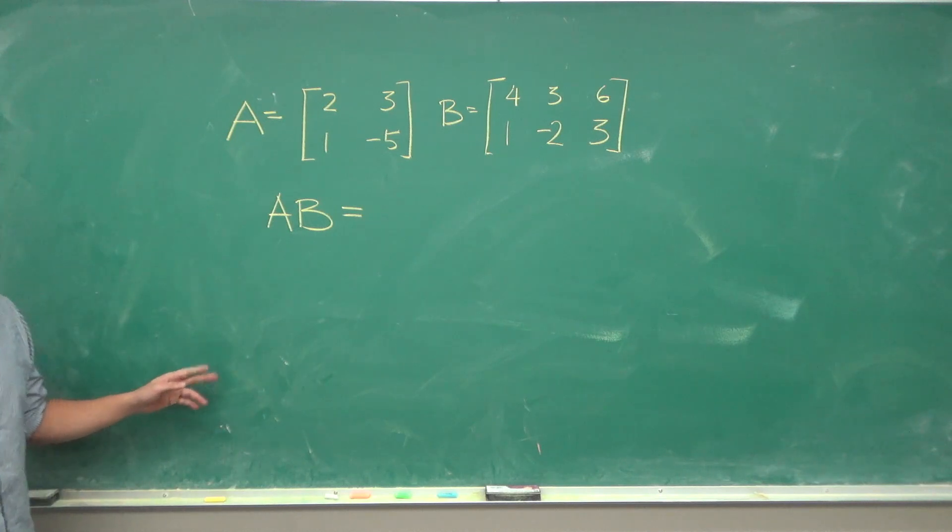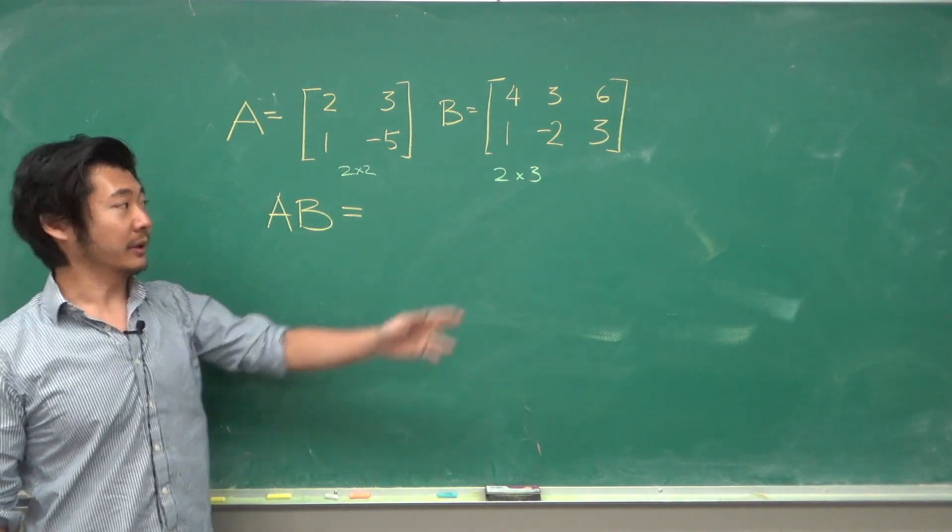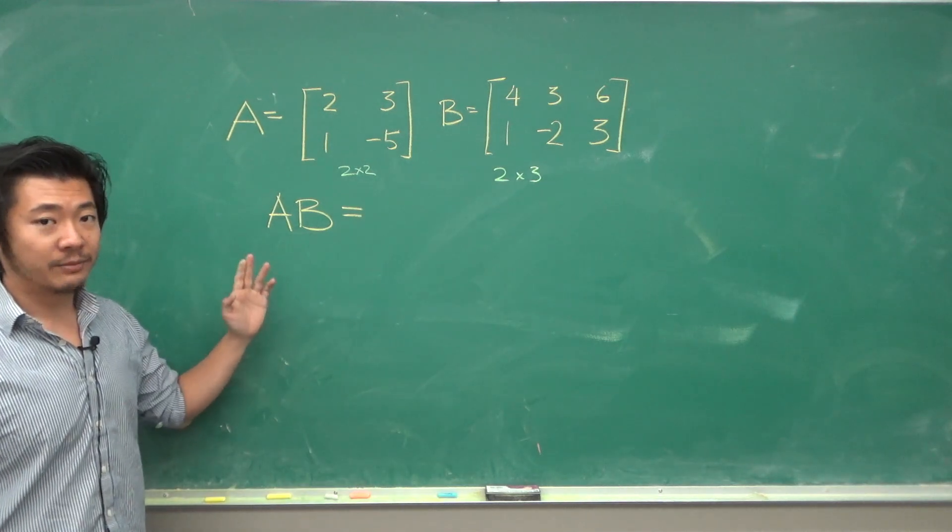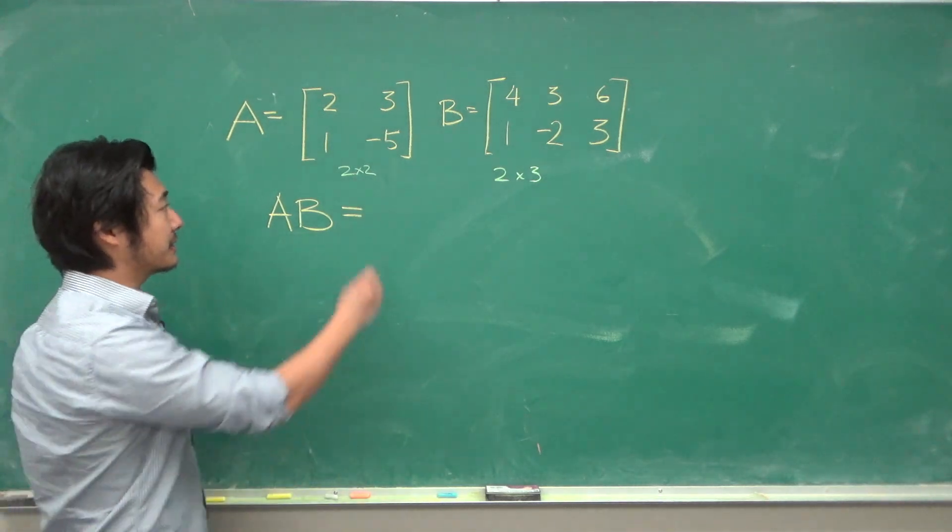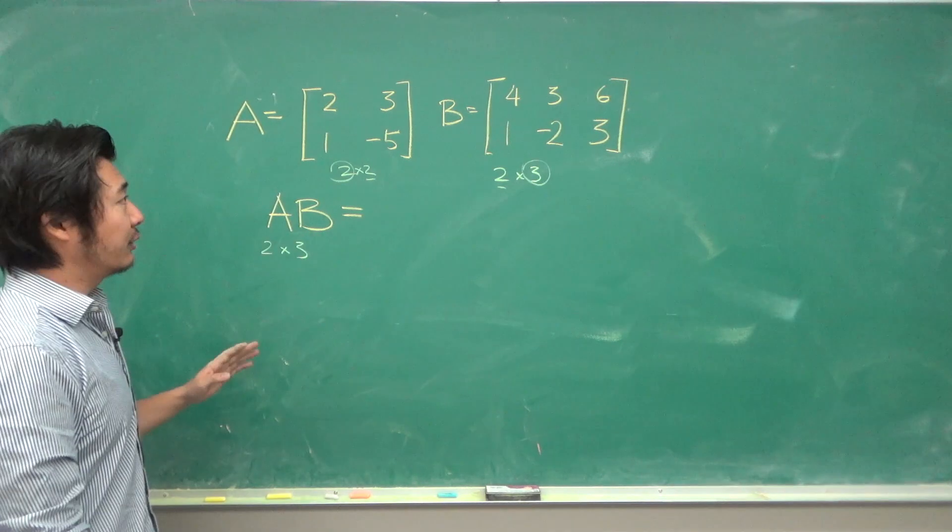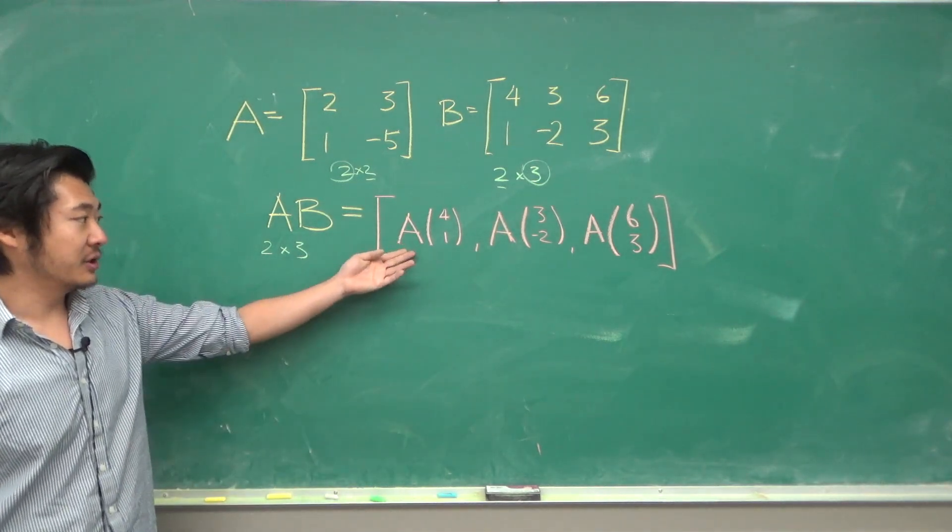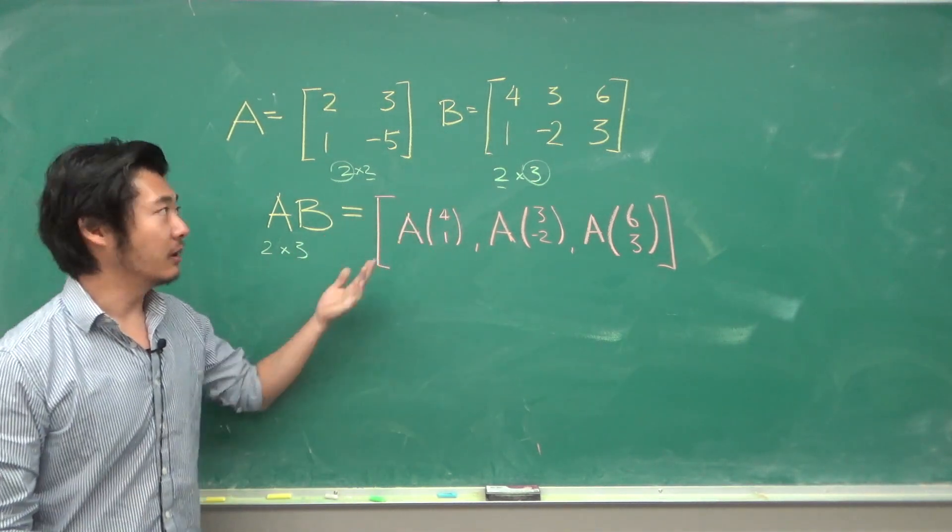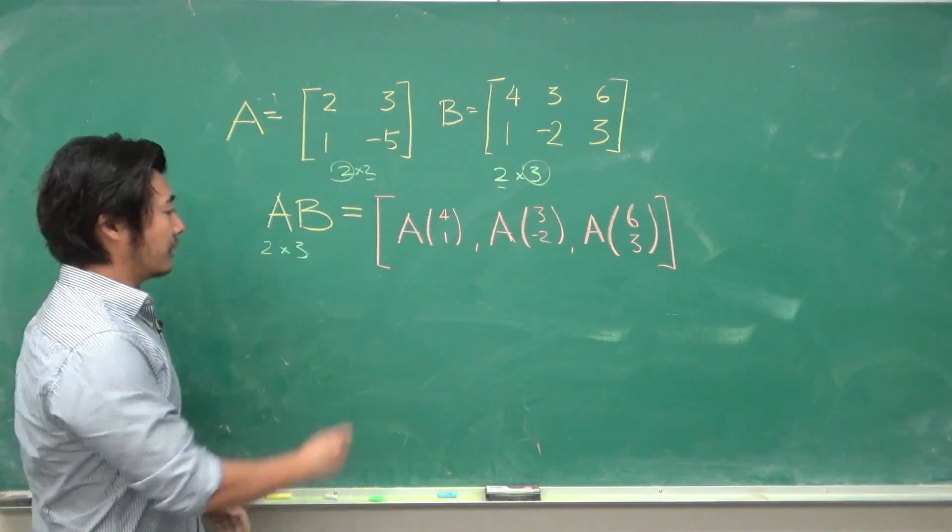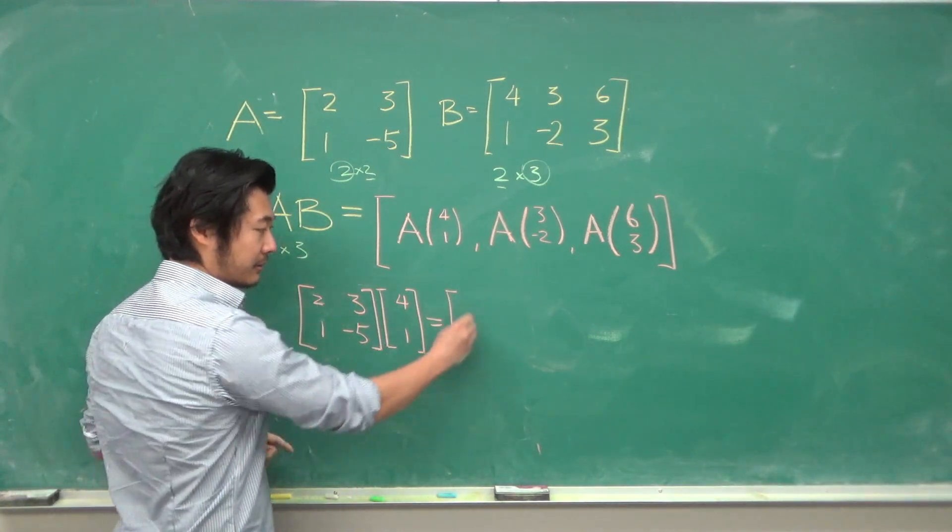Let's do an example. Let A be a 2 by 2 and B a 2 by 3 matrix. Matrix multiplication between A times B will make sense, and the resulting matrix will be a 2 by 3 matrix. If we follow our definition, this is just this matrix where we do a matrix multiplication of A times the first column of B, and so on. We do row times column: 8 plus 3 is 11, 4 minus 5 is negative 1.